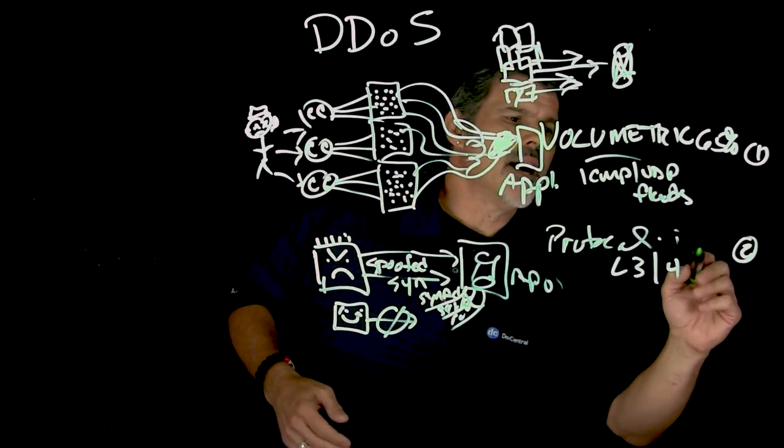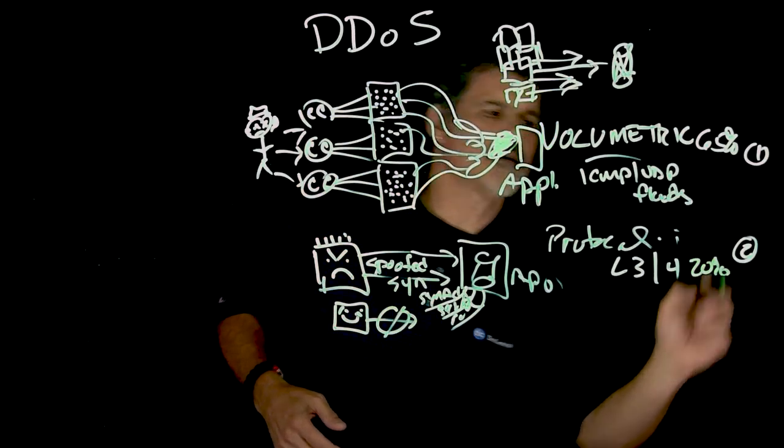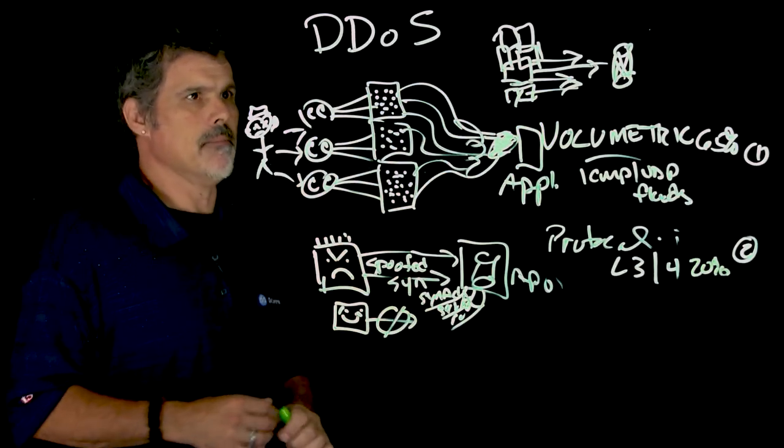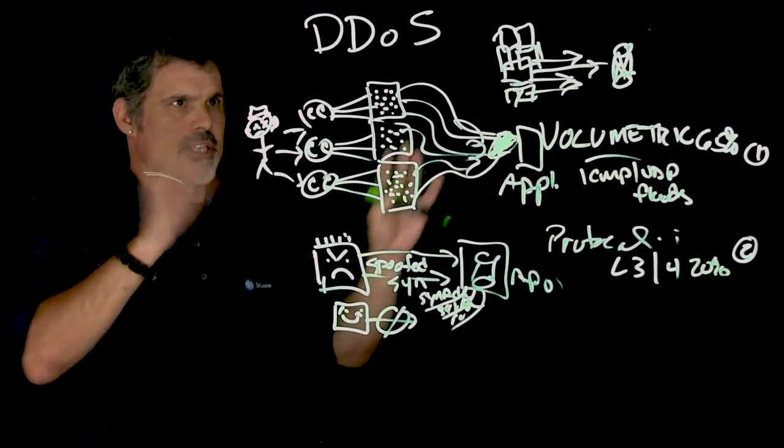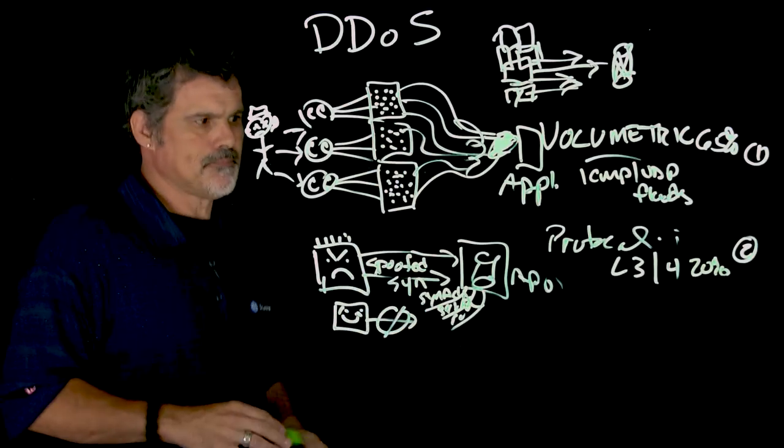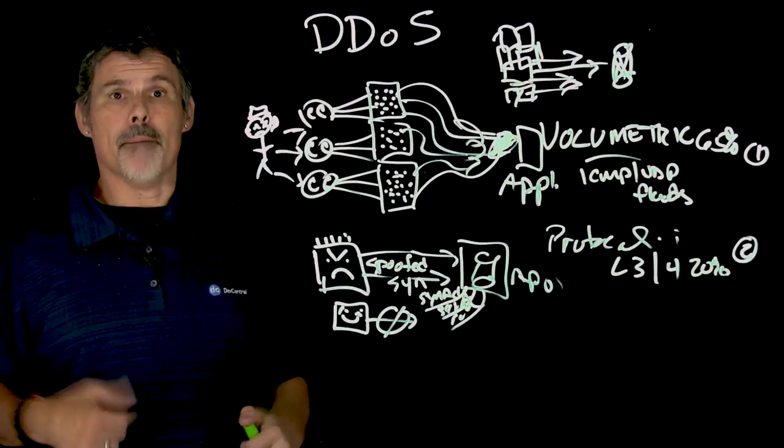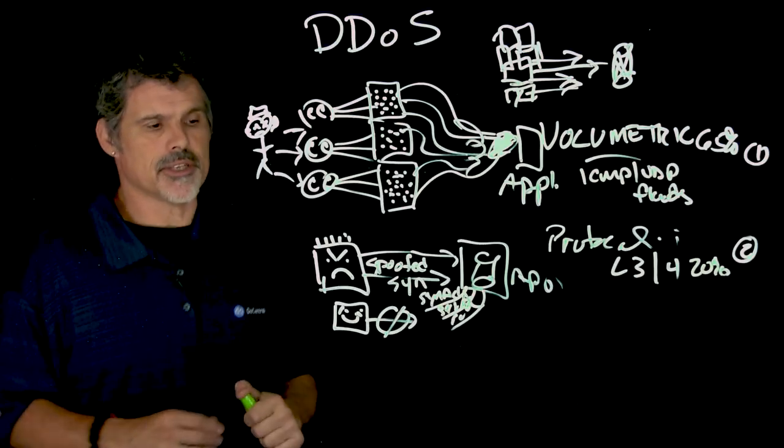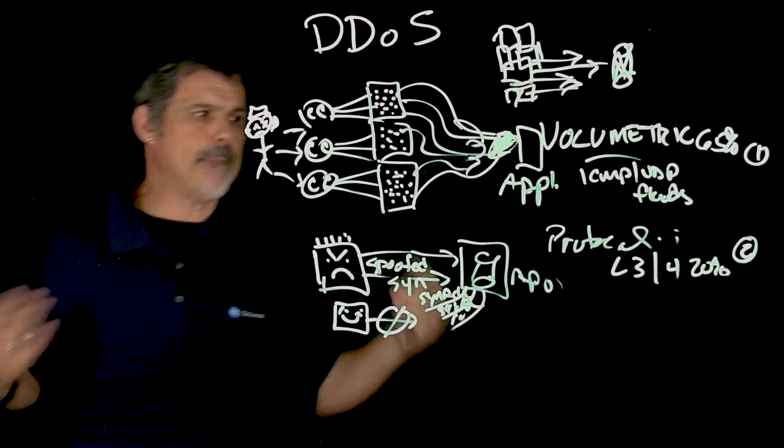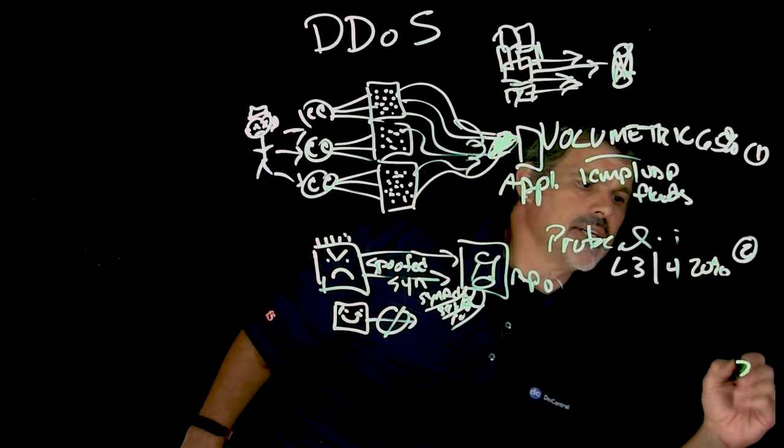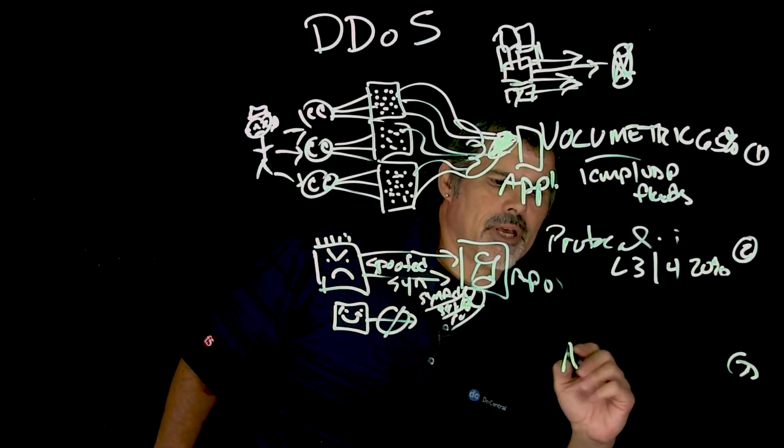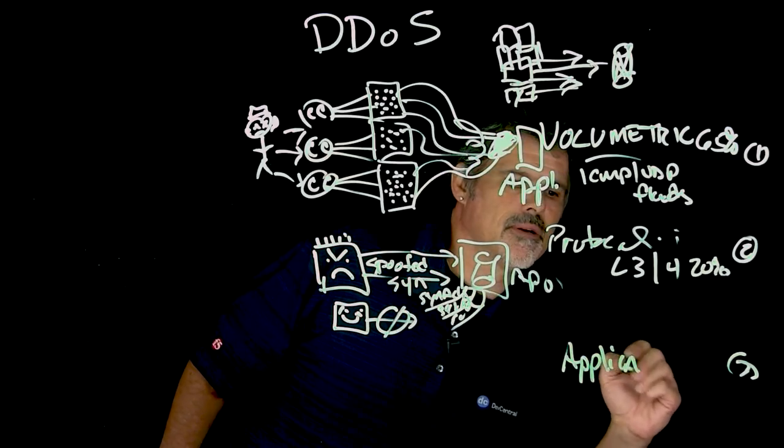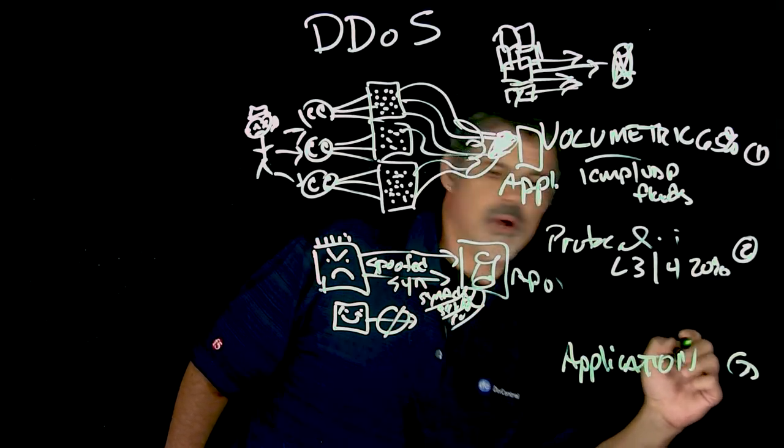These probably, if I remember correctly, about 20% of the time on how these kind of get distributed out. And then last, but certainly not least, because it can be quite detrimental, is an application DDoS attack.